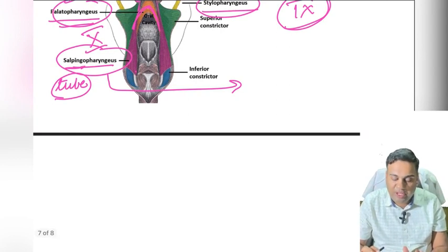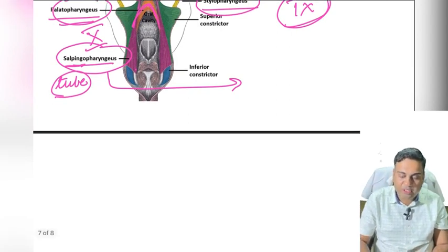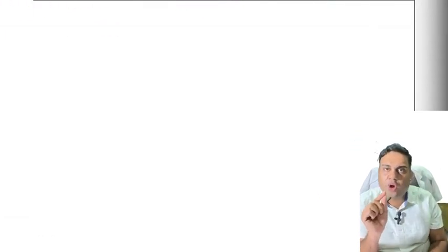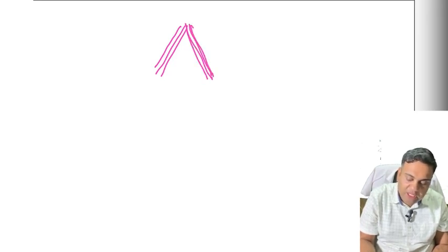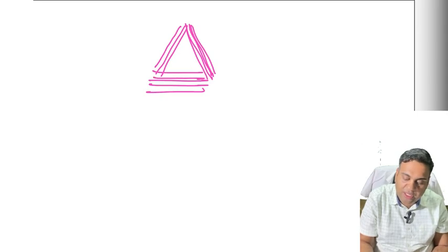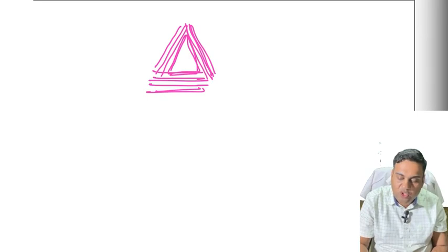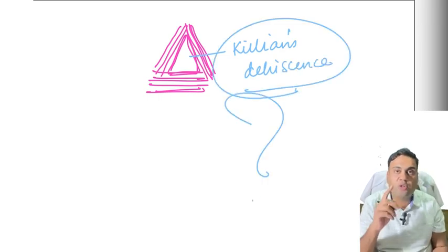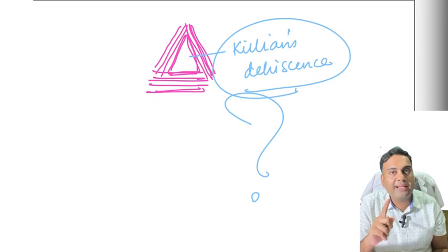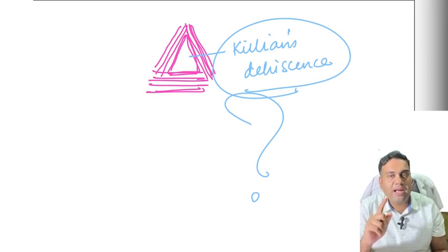The last concept for today: in the inferior constrictor, there is a triangular gap between the thyropharyngeal and cricopharyngeal parts. This gap is called Killian's dehiscence. We will come back in the next lecture to discuss the diseases of the pharynx and explore Killian's dehiscence in detail.